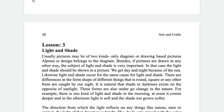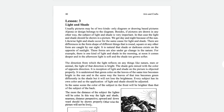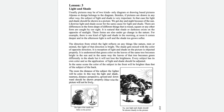Now turn to page number 30, lesson number three: light and shade. If your picture is not based on a diagram, then light and shade are most important. We get day and night because of the sun. It is natural that shade or darkness exists on the opposite side of sunlight. These forms also undergo change in nature — for example, there is one kind of light and shade in the morning, and at noon it comes deeper, and in the afternoon the light is soft and shade also grows softer.